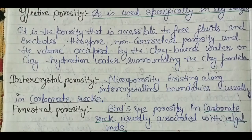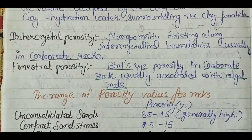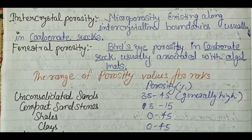Intercrystal porosity is microporosity existing along intercrystalline boundaries, usually found in carbonate rocks. Fenestral porosity — also called bird's-eye porosity — is also found in carbonate rocks and is usually associated with algal mats, which are basically organic matter.